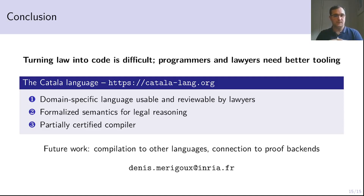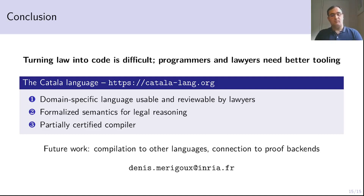In conclusion, turning law into code is difficult. Programmers and lawyers need better tooling to do that. And to answer that problem, we developed the Catala language with three major contributions. It is a domain-specific language that is meant to be usable and reviewable by lawyers to ensure that the code is correct. It has formalized semantics that are adapted to legal reasoning, based on the work of Sarah Lowsky. And third, we partially certified the compiler and thus raised the level of assurance on our compilation tool chain, making it a robust tool chain amenable for production deployment. As future work, we want to extend the compilation of Catala to other languages — right now we have OCaml, Python, and JS — and we want to connect Catala to proof backends in order to enable the proof of several properties about the text of the law. Thank you.